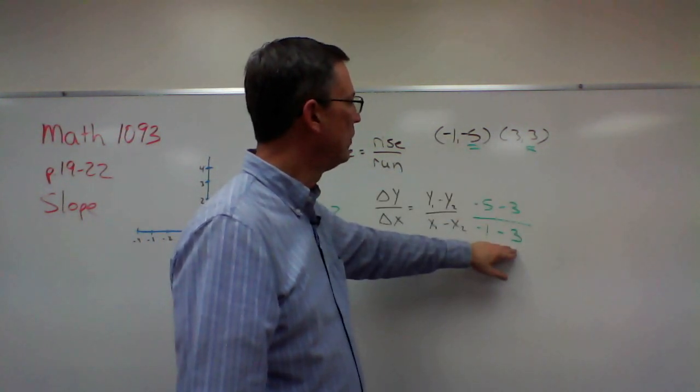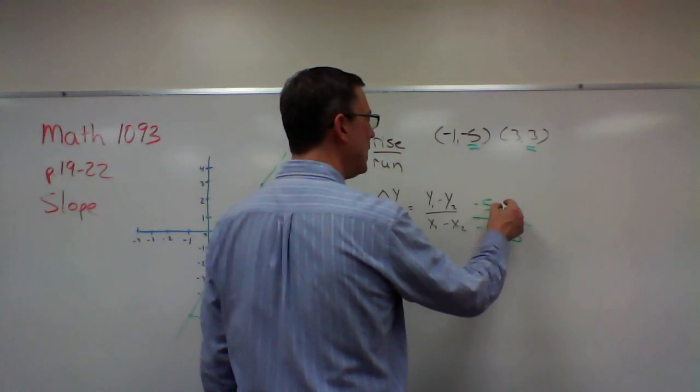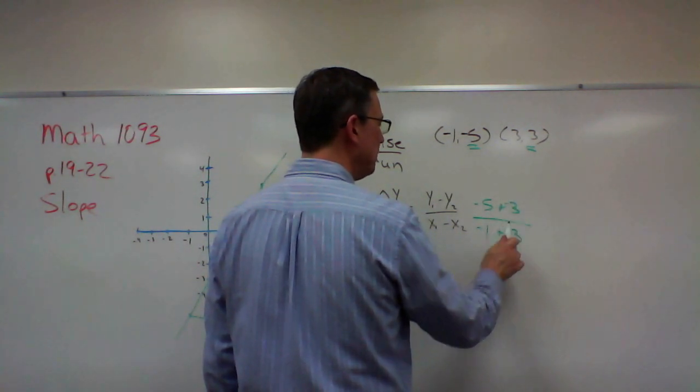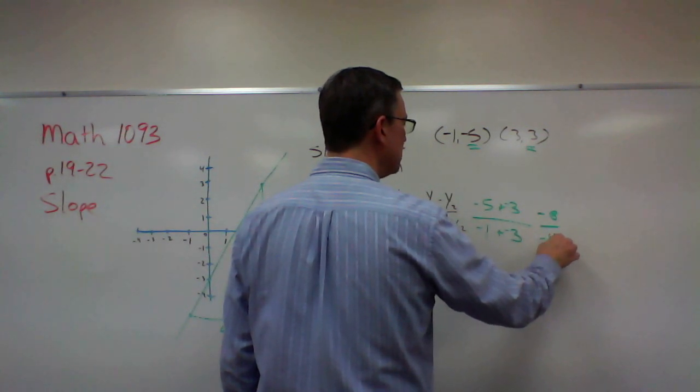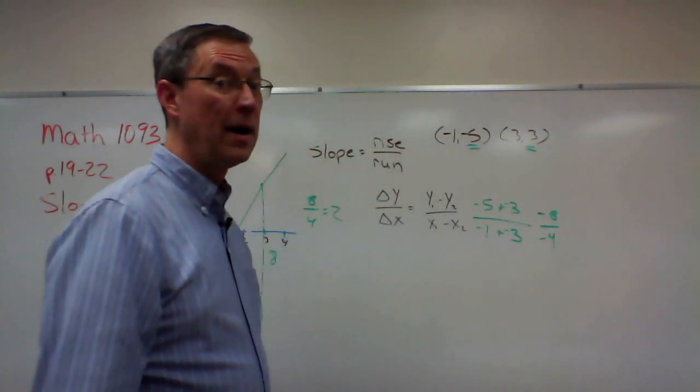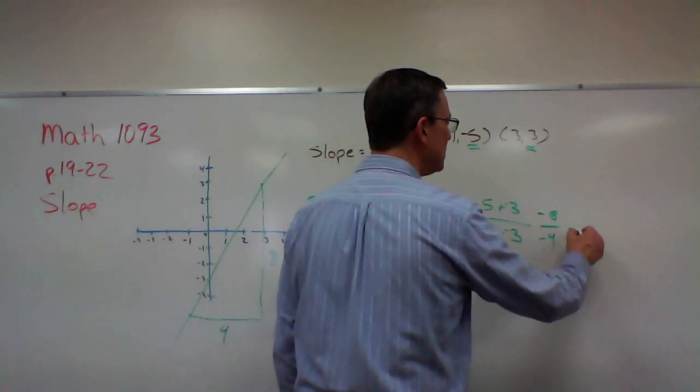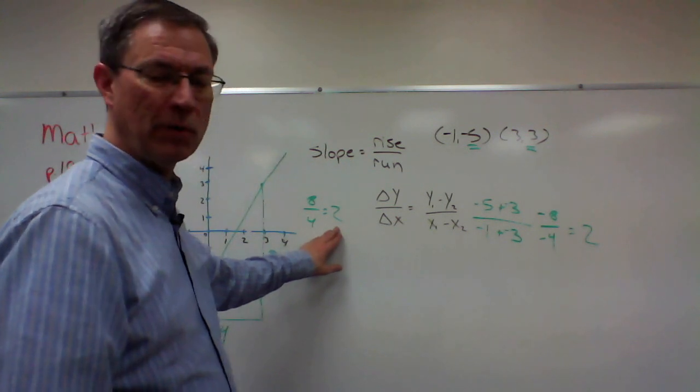Now, let's solve this, remembering that when we are subtracting, it's the same as adding, and change the second number to its opposite, change the second number to its opposite. So we get negative eight over negative four, and negative divided by negative is positive, and eight divided by four is two. Same thing that I got right here.